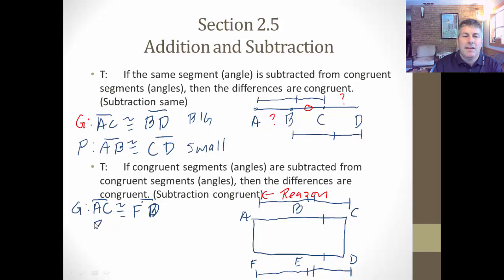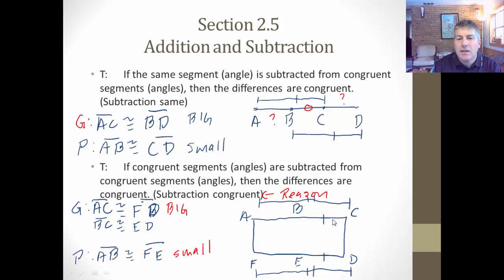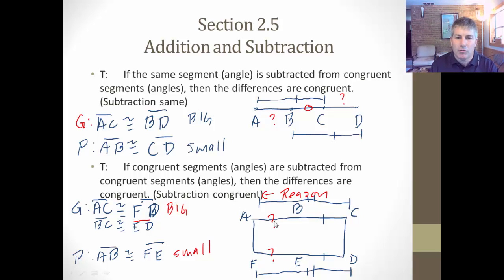BC is congruent to ED. So what can we prove? We can prove that AB is congruent to FE. We can do that by subtracting — these two big things are congruent, so we're going from something big to something small. We're subtracting not the same set of points, but different sets of congruent points. BC and ED are being subtracted to give us that those two smaller things, AB and FE, are congruent. Our reason would be 'subtraction of congruent segments.'